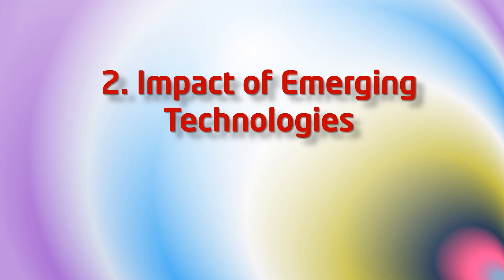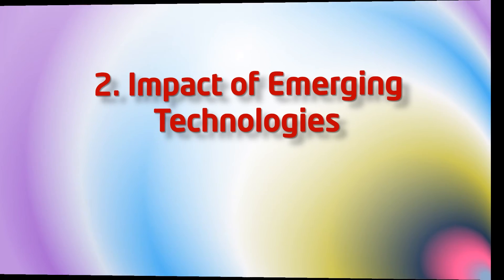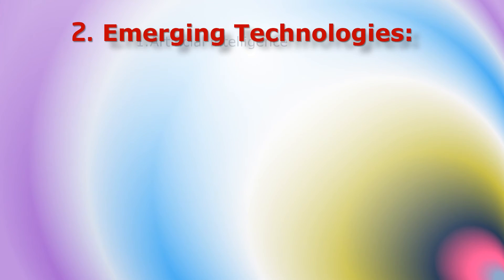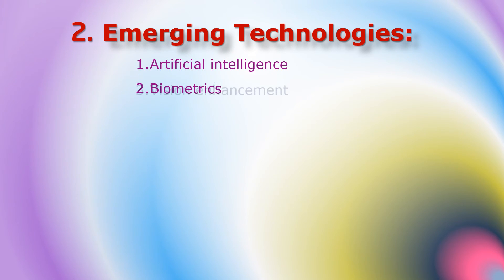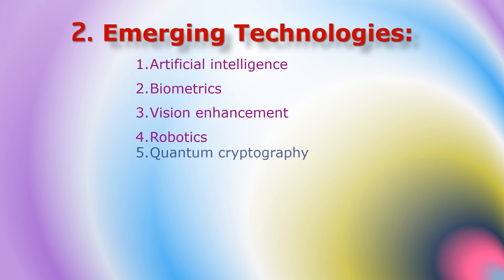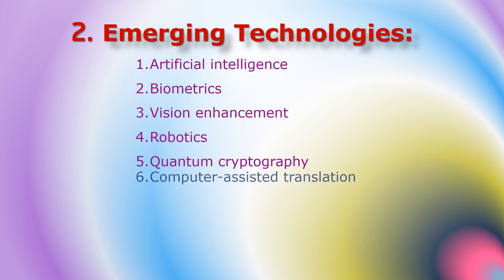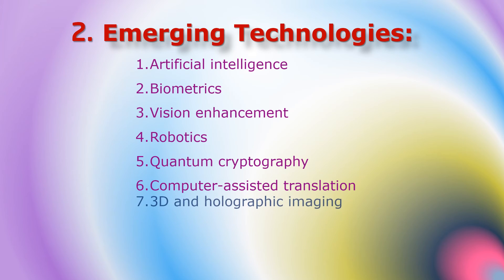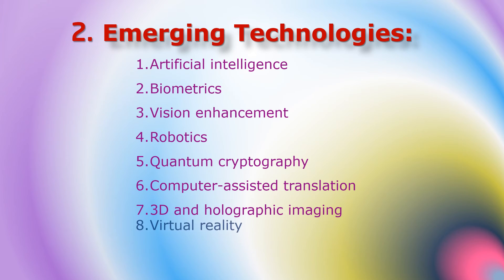In Section 2, we'll cover the impact of emerging technologies. We'll identify each of these technologies and discuss its impacts on everyday life. Emerging technologies such as artificial intelligence, biometrics, vision enhancement, robotics, quantum cryptography, computer assisted translation, 3D and holographic imaging, and virtual reality.